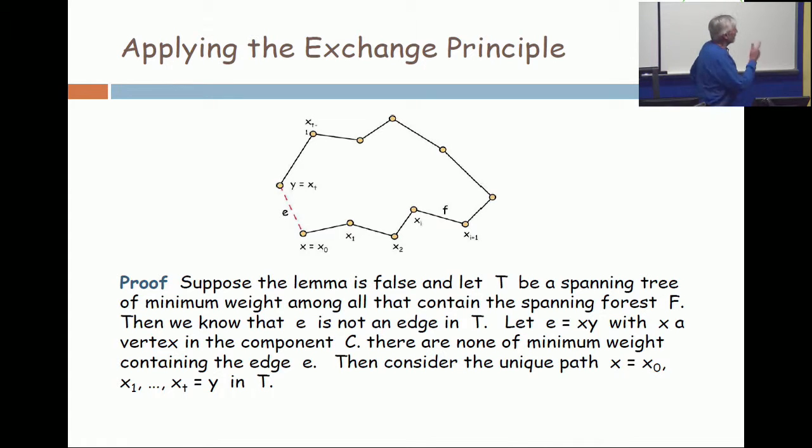So how do we do that? What this picture is supposed to represent is we have the edge E shown in dashed red, and here is the optimum tree which has a path in it between the two endpoints of X and Y as illustrated.